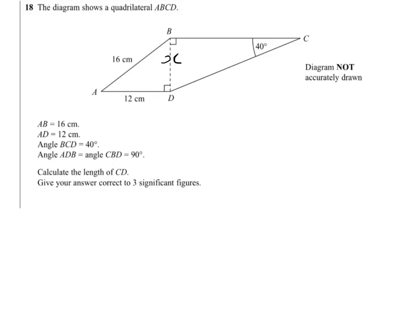So we'll start with BD. We'll call it X. By Pythagoras, when X is squared, it will equal 16 squared, the large side, minus 12 squared, one of the smaller sides.